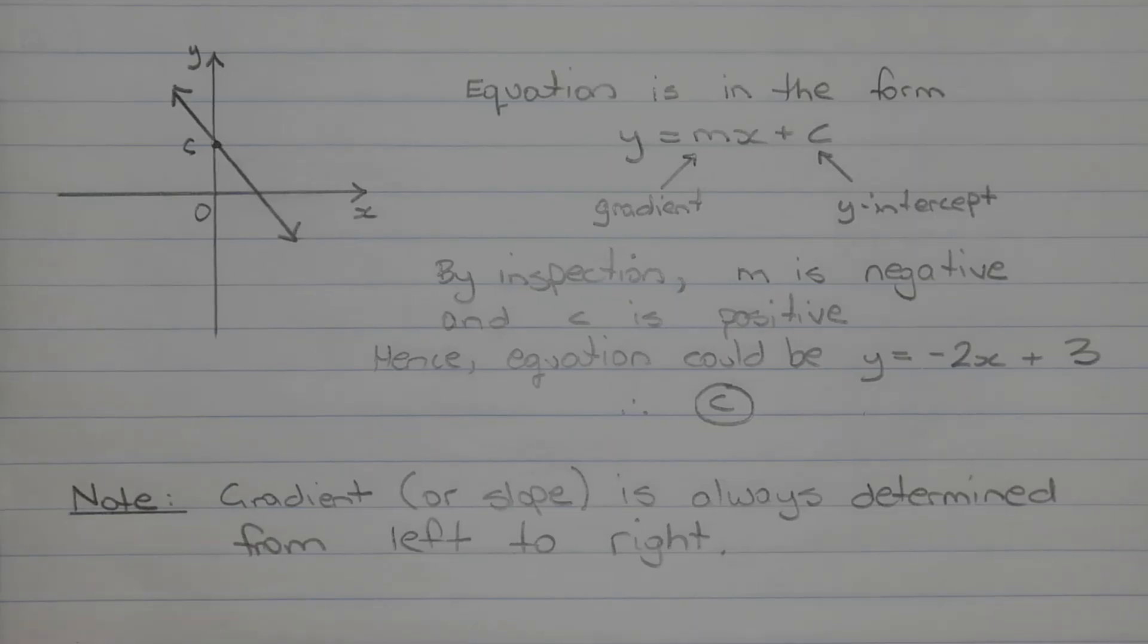The equations presented in all four options are in gradient intercept form, that is y equals mx plus c, where m represents the gradient of the line and c represents the y-intercept, and that's the point where the line crosses the y-axis.